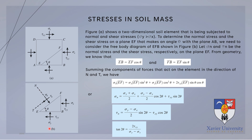Let sigma-n and tau-n be the normal stress and the shear stress respectively on plane EF. From geometry, EB equals EF cosine theta, and FB equals EF sine theta. Summing the two components of forces acting on the element in the direction of the normal and shear axes, we arrive at the formulas for our normal stress and shear stress.